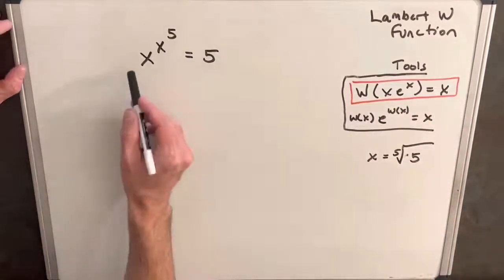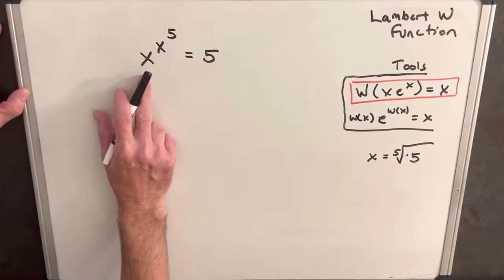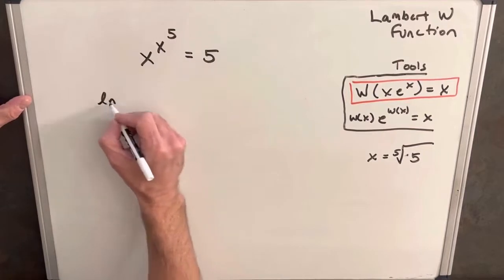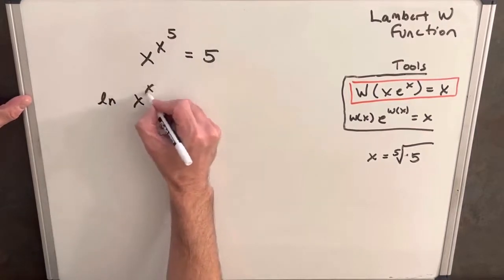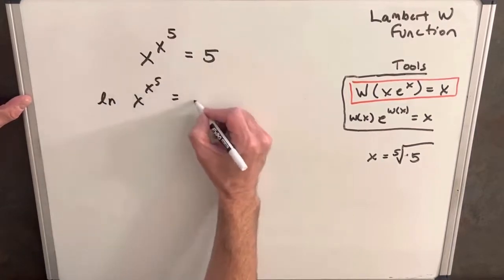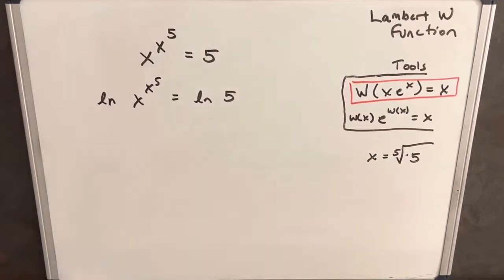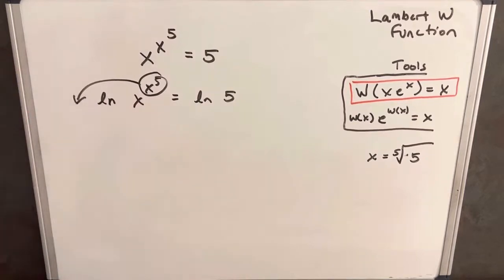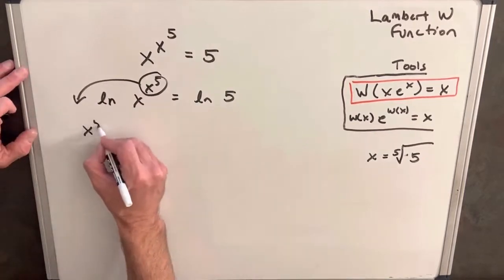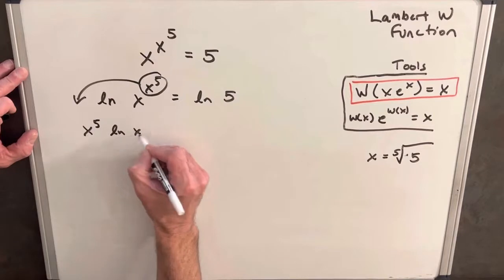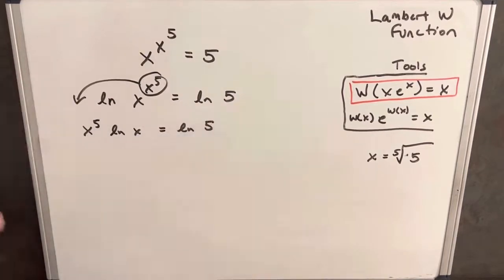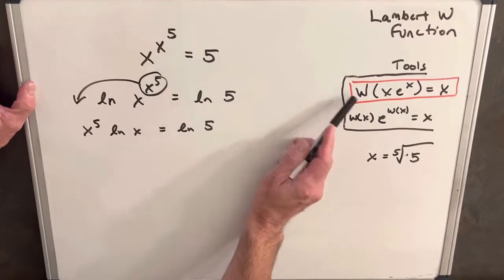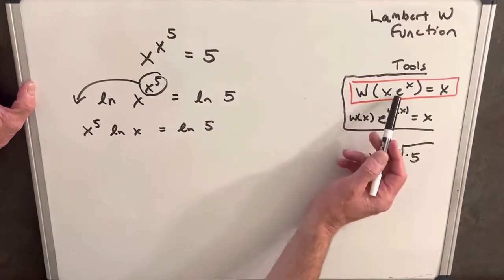So we'll use this and we primarily want to use this one, it's going to be the most helpful in solving these problems. Okay, so let's look how this works when we manipulate this equation. So I'm going to just start, we'll take natural log on both sides, so we'll have natural log x to the x to the fifth equals natural log of five. We can then take this exponent and pull it out front here, so x to the fifth ln x equals ln five.